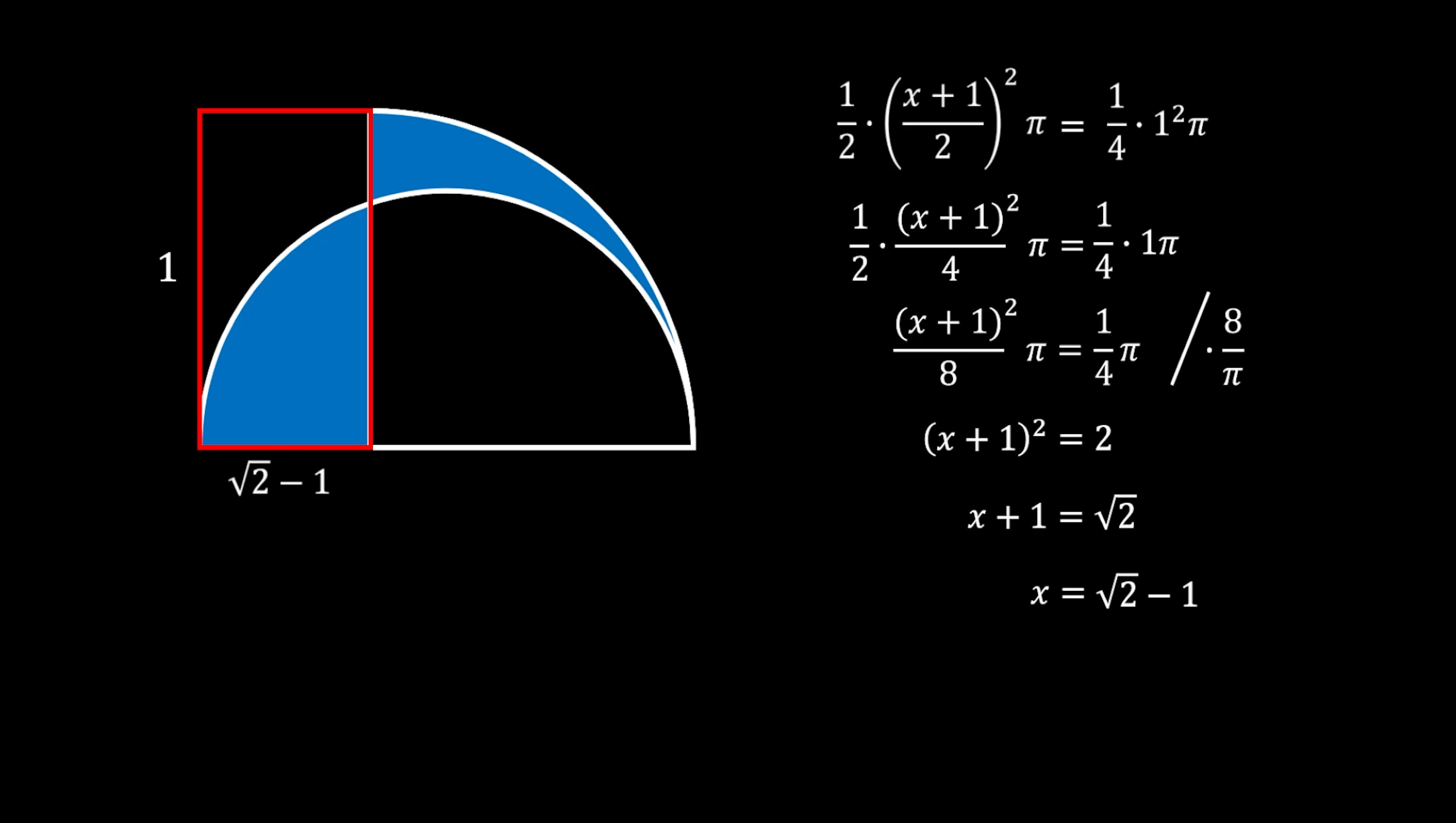Now it's easy to find the area of this rectangle since it equals the product of height and base. In our case, that's 1 × (√2 - 1) = √2 - 1. We can approximate the area of our red rectangle to be 0.41 square units, and this is our solution.